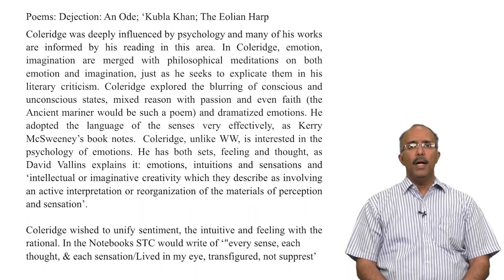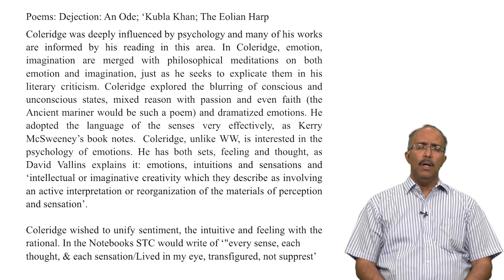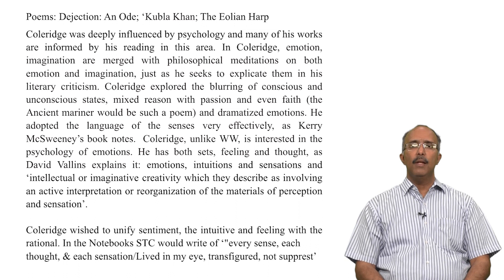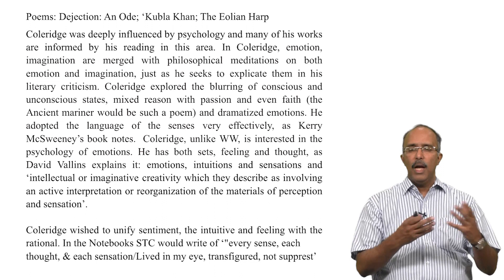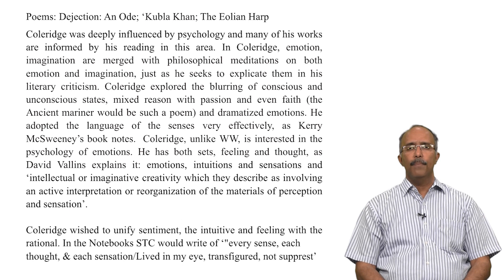Coleridge was deeply influenced by psychology and philosophy, and much of his work is informed by his reading in these areas. You will see the influence of it in even his prose work like Biographia Literaria. In Coleridge — and this is where he differs from Wordsworth — emotion and imagination are merged with philosophical meditations. He wants to build a theory of emotion and imagination, and much of what we have heard in previous sessions on primary and secondary imagination, fancy and imagination, comes from this influence from philosophy and psychology.